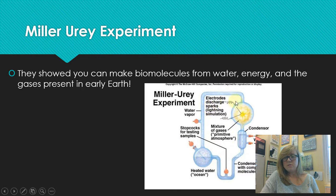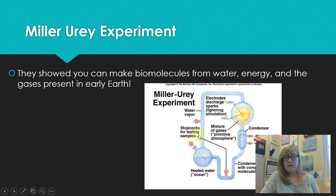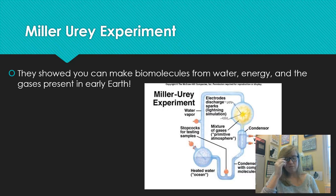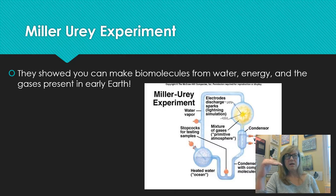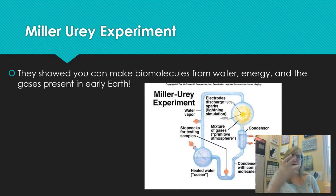They turned the machine on, let it bubble up and cycle through everything, and left it running for a while. The water was trapped in the closed system. After a while, the water started to turn brown, and when they tested it, they found - even though they had started with only inorganic stuff - the beginnings of organic compounds like amino acids. So they showed you can make basic biomolecules, the monomers of living things, from just water, energy, and inorganic gases present on early Earth.